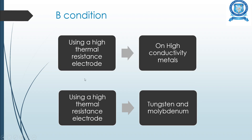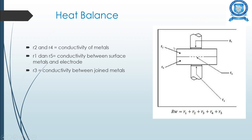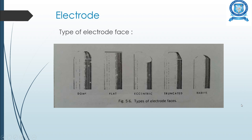In condition B, high thermal resistance electrodes — such as tungsten or molybdenum — are used on high conductivity metals. In condition C, an increase in thickness of the higher conductivity metal helps secure better heat balance. The total resistance Rw is expressed as Rw = R1 + R2 + R3 + R4 + R5, where R2 and R4 are the resistances of the metals, R1 and R5 are the contact resistances between the metal surfaces and electrodes, and R3 is the resistance at the joint interface between the metals.